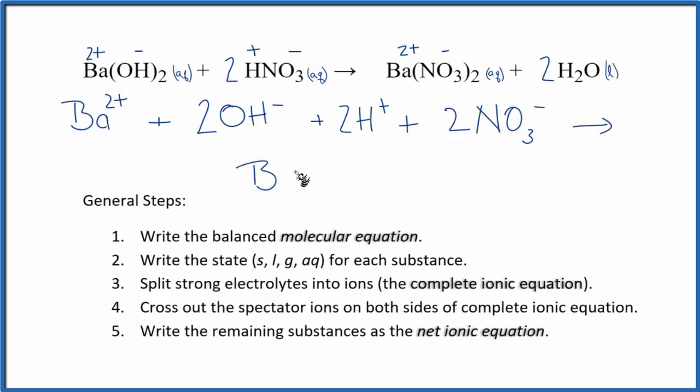These are the reactants. For the products, we have Ba2 plus, then we have the nitrate, NO3 minus, but this subscript means we have 2 of these. So let's put a coefficient of 2, and then we have 2H2O. And we said we don't split liquids apart in net ionic equations. So this is the complete or total ionic equation.